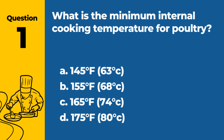Question 1. What is the minimum internal cooking temperature for poultry? a. 145°F, 63°C. b. 155°F, 68°C. c. 165°F, 74°C. d. 175°F, 80°C.